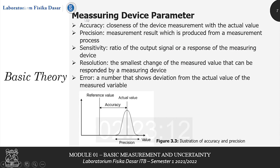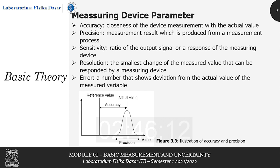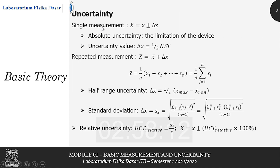In measuring, there are several terms that need to be known. First, accuracy is the closeness of the device measurement with the actual value. Precision is the measurement result produced from a measurement process. Sensitivity is the ratio of the output signal or response of the measuring device. Resolution is the smallest change of the measured value that can be responded by a measuring device. An error is a number that shows deviation from the actual value. For a single measurement, the result accompanied by uncertainty is written as x ± Δx, where Δx is half of the least count. Δx for repeated measurement is half times (x_maximum minus x_minimum), and the relative uncertainty is Δx divided by x.